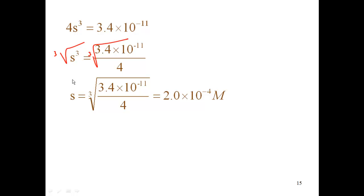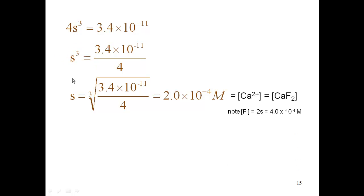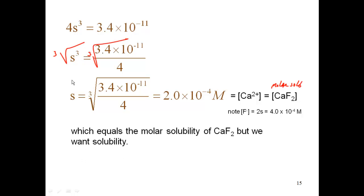Now, what does S represent in our problem? It represented two things: the concentration of calcium, as well as the molar solubility of calcium fluoride — which is what we're looking for. So this concentration of calcium fluoride is my molar solubility. However, we're looking for solubility in grams per liter, so the units aren't right yet. Just to note: if you wanted the concentration of fluoride ion, that would be 2×S, so 2 times 2×10⁻⁴, which gives 4×10⁻⁴ molarity.